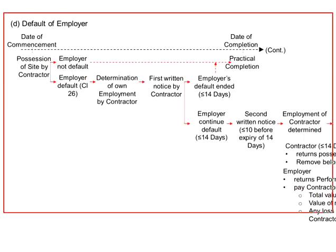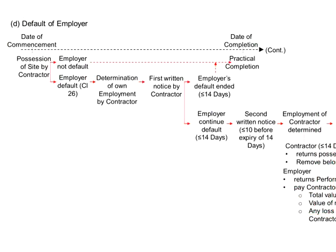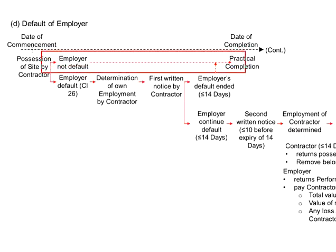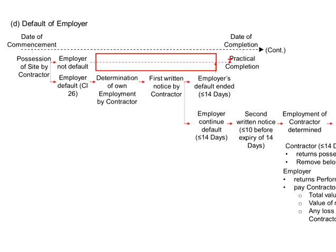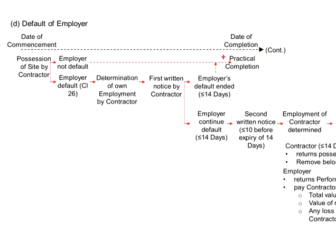To better imagine the entire process, we can use this flowchart. This represents a typical timeline from the date of commencement to the date of completion. If everything goes smoothly and the employer has no default, then the work can be carried out smoothly and completed on time. Everyone is happy — the employer gets what he wants and the contractor acquires what he needs.